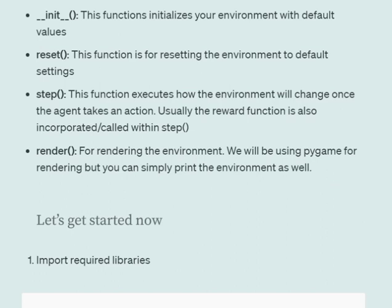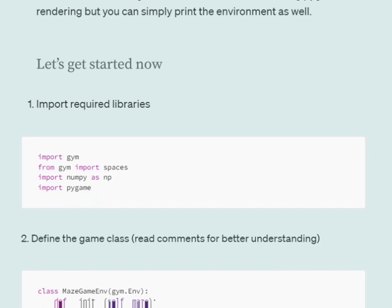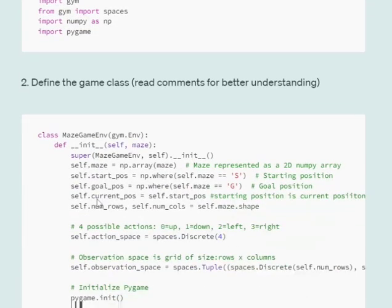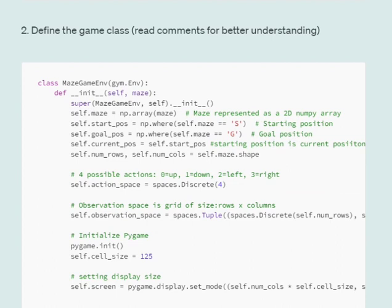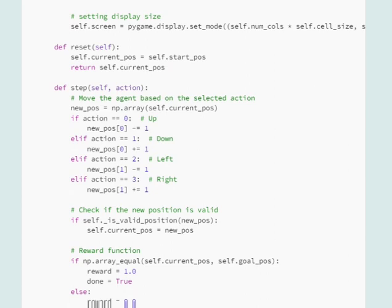Let's start coding. We'll import a few libraries: gym, spaces from gym, numpy, and Pygame. The class MazeGameEnv inherits from gym.Env. In the constructor `__init__`, we set `self.maze` equal to the numpy array maze parameter. While initializing, we pass a 2D numpy array which holds the starting point for the agent, the home position, obstacle positions, goal position, current position, number of rows, and number of columns.